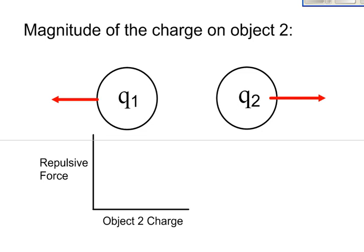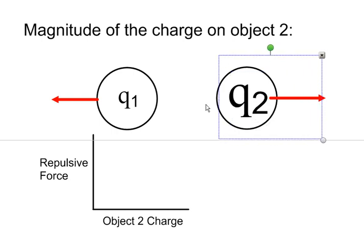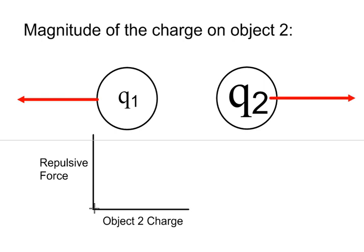It turns out that if you do the same thing to charge two and increase its charge, it also has the effect of increasing the force that it pushes on charge one, and therefore the force that charge one pushes back on charge two. The result is, once again, a linear relationship. Changing the charge has a direct relationship on the repulsive force between the two objects.